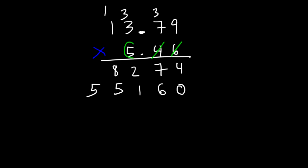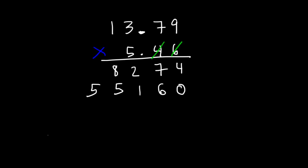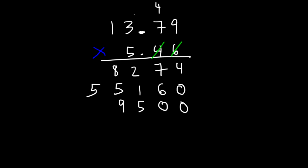So now we're going to move on to 5. This time, we're going to add 2 zeros. So now, 5 times 9, that's 45. And then 5 times 7 is 35 plus 4, that's 39 — carry over the 3. 5 times 3 is 15 plus 3, that's 18 — carry over the 1. And then 5 times 1 is 5 plus 1, that's 6.